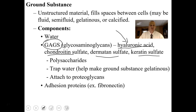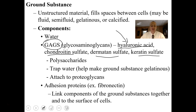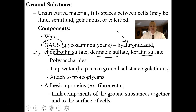We also have as components of the ground substance adhesion proteins like fibronectin. Fibronectin will connect other components of the ground substance together and connect it to the surface of the cells. Some people even take these as supplements — when you have arthritis, people think you can take chondroitin sulfate and various things as supplements to help repair and safeguard those joints.